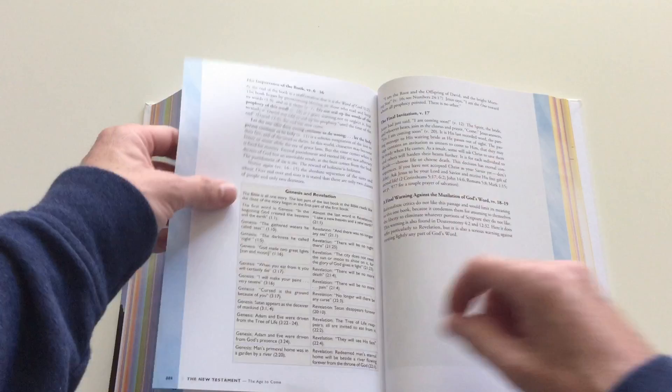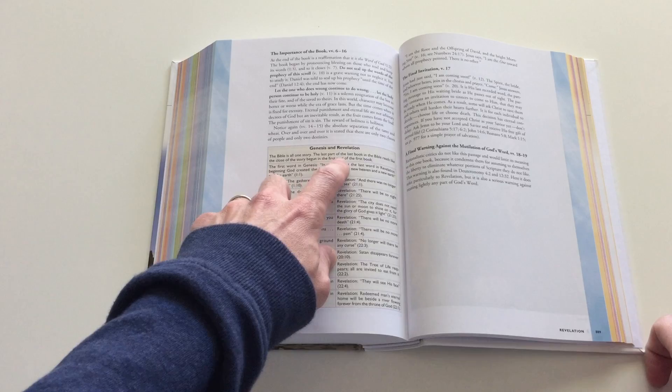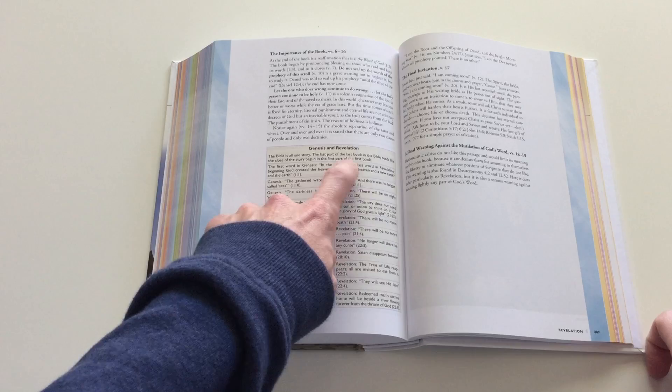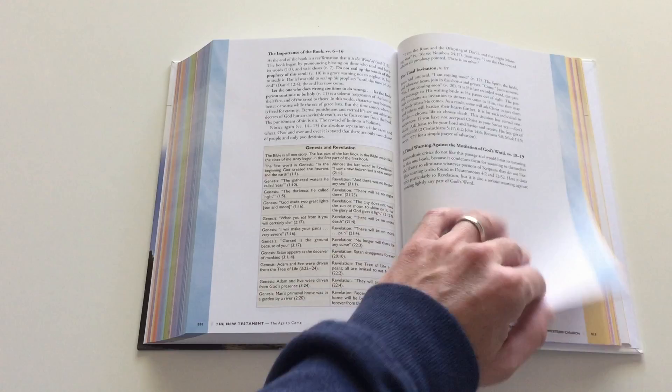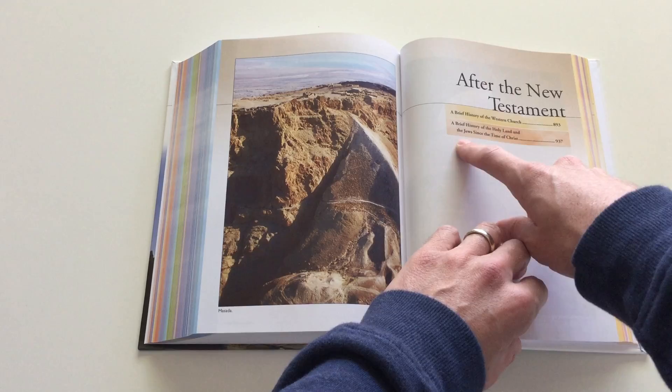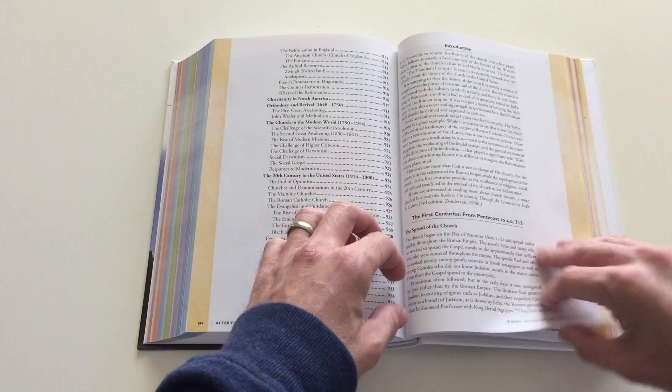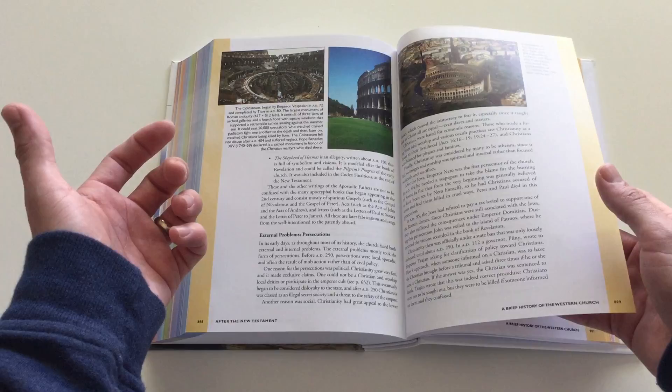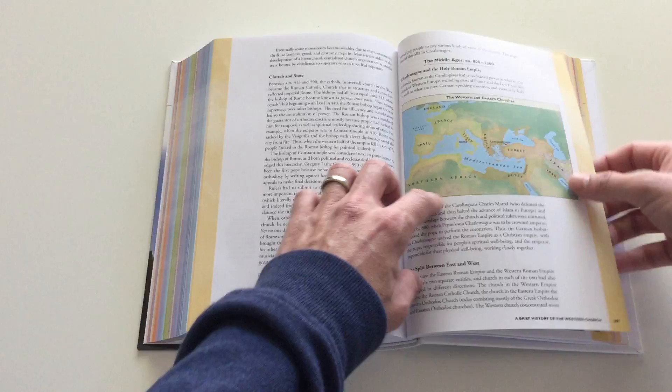Let's get back here a little bit towards the end. Genesis and Revelation, the Bible is all one story. The last part of this book reads like the close of the story begun in the first part of the first book. So it gives you kind of comparisons between Genesis and Revelation. Genesis on the left, Revelation on the right. It just gives you all kinds of information after the New Testament. A brief history of the Western church, a brief history of the Holy Land and the Jews since the time of Christ. This is just crazy. Look at all this stuff. Look at all the pictures. It's just so much information in here. The Western and Eastern churches, and it kind of highlights them there for you. And the picture map.